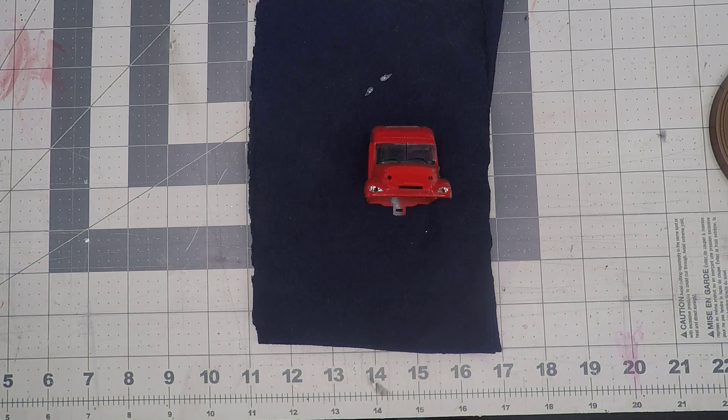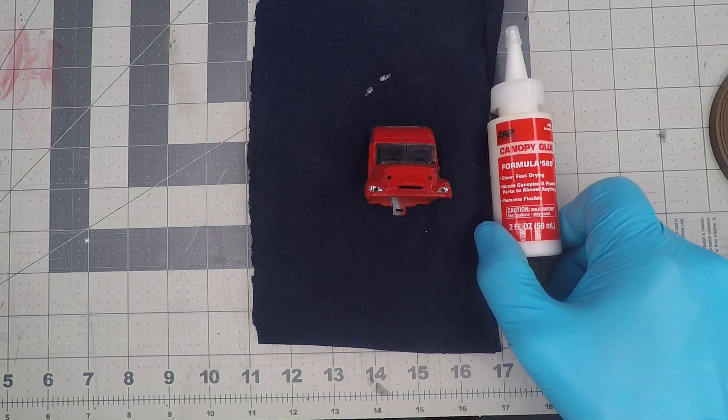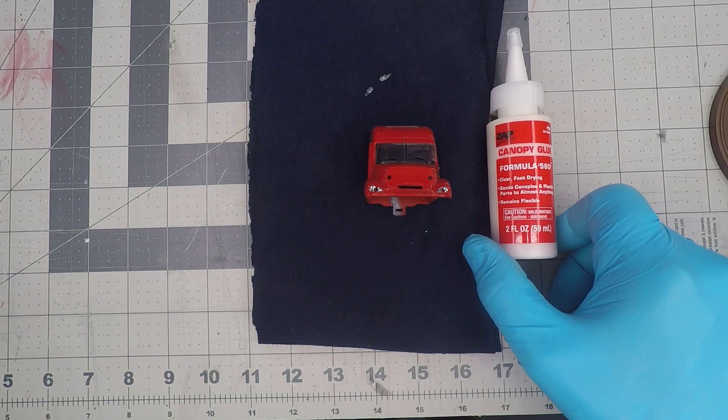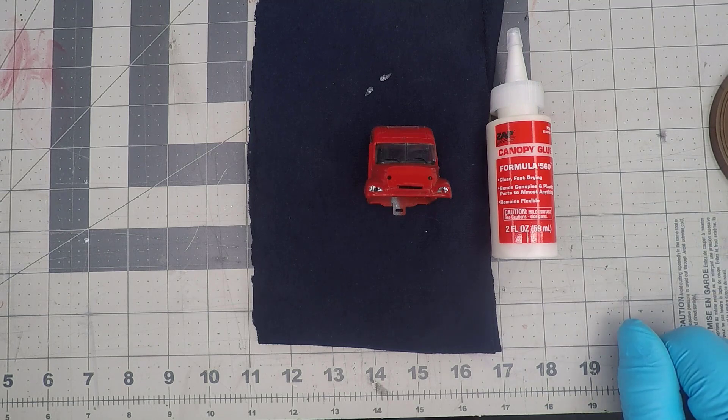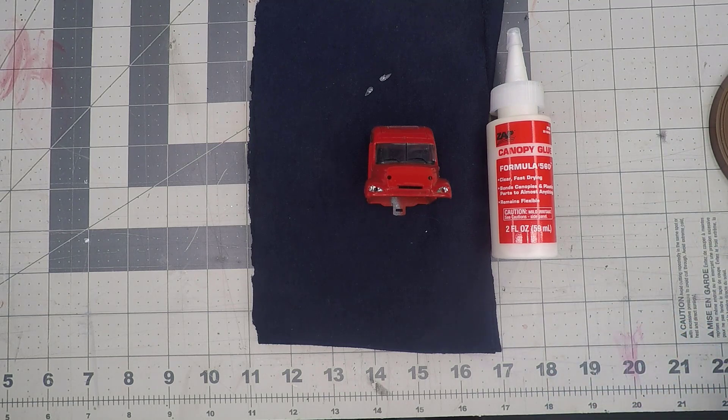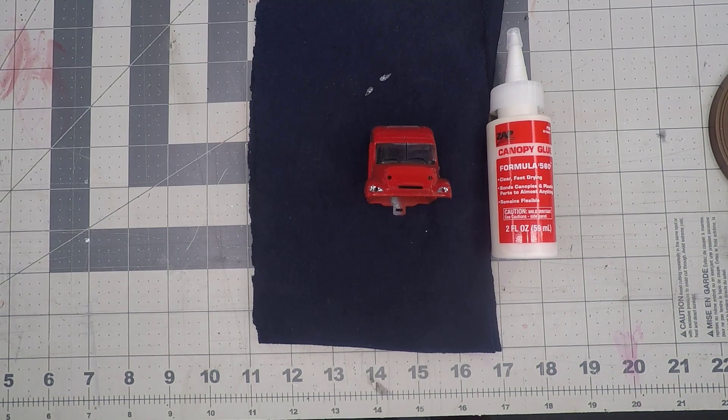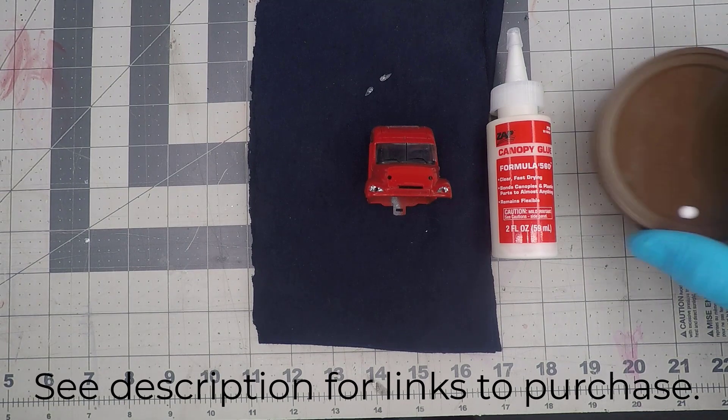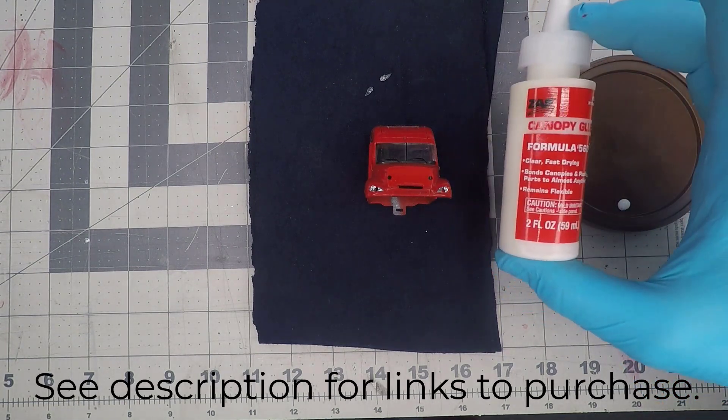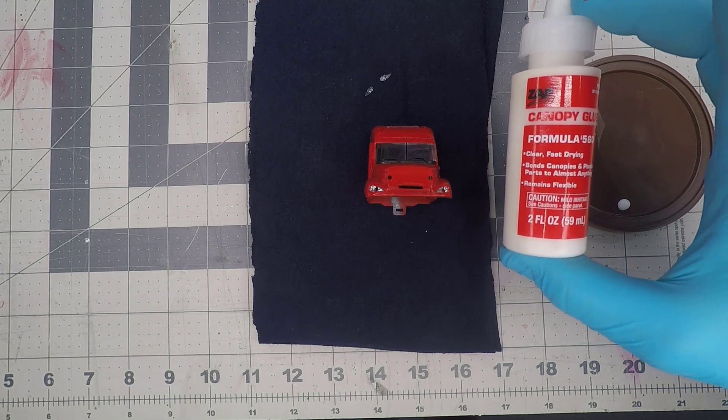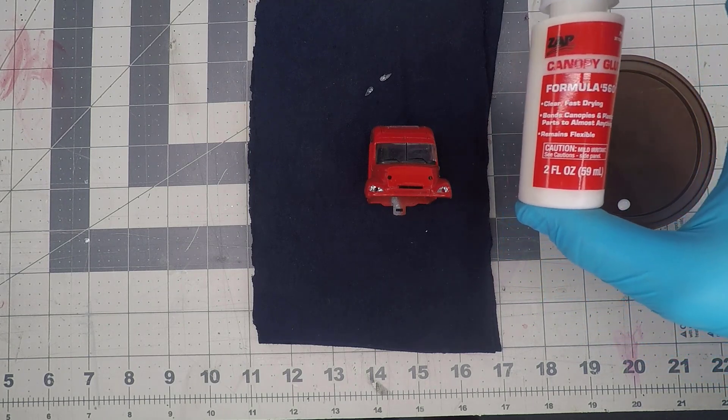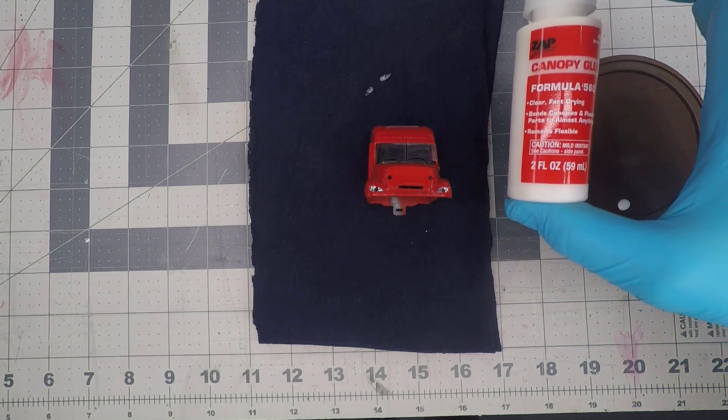And it is as simple as not using glue that causes glue haze. This is called Formula 560, it's canopy glue. You can buy it for about four to six dollars anywhere online. Just Google 'Zap canopy glue Formula 560.' I think it comes in a couple of different colored bottles, it's the same thing as I understand, but do read the labels.